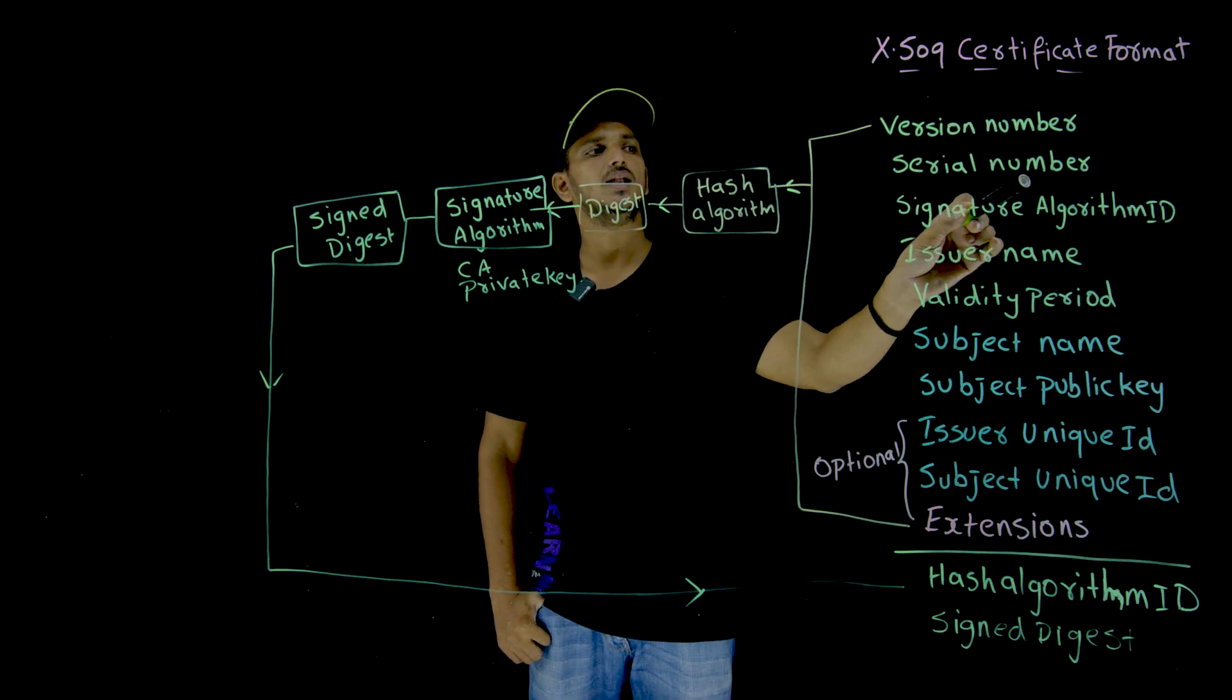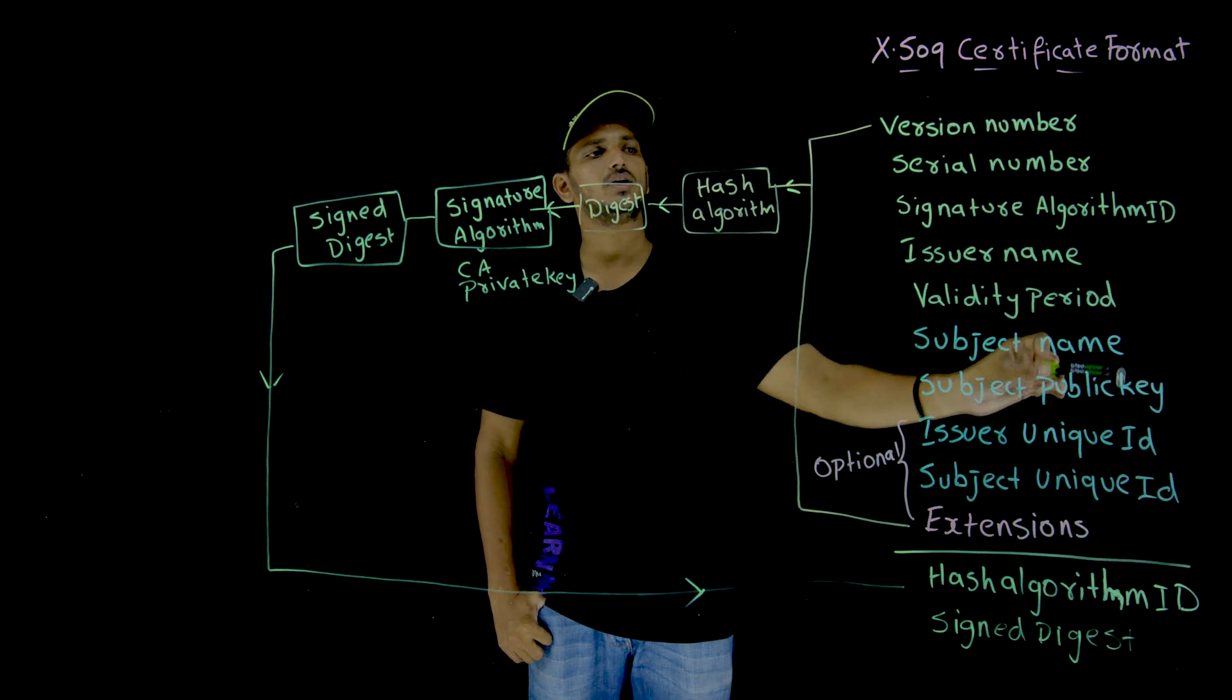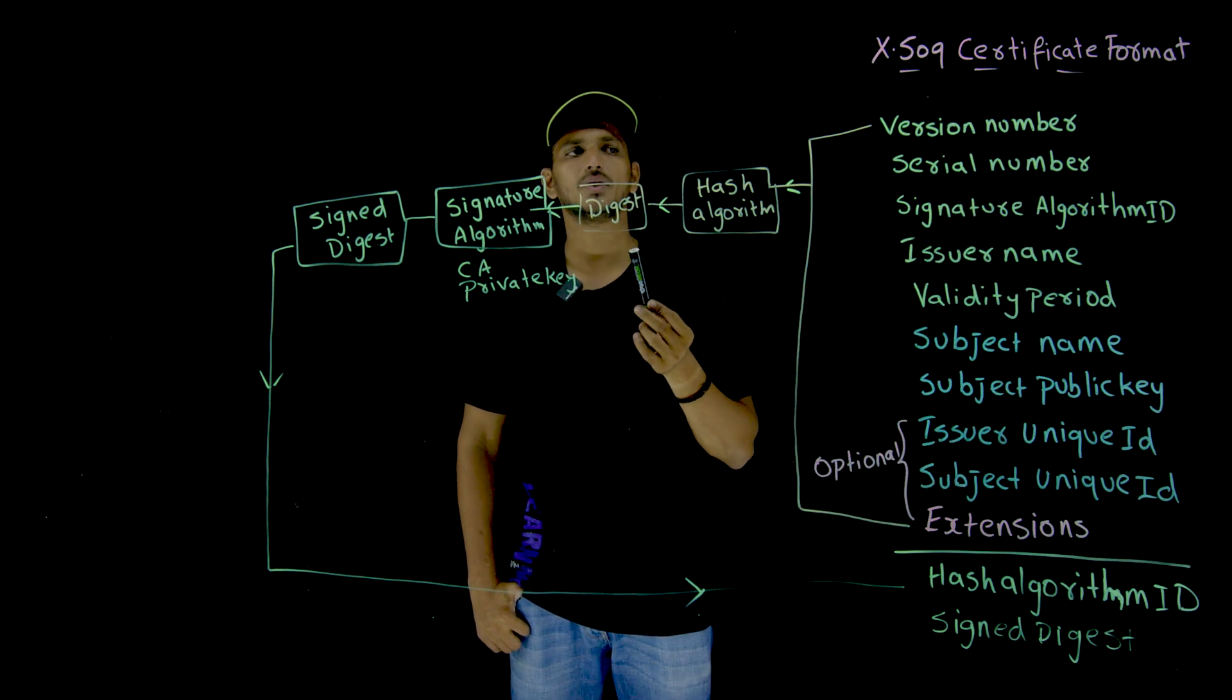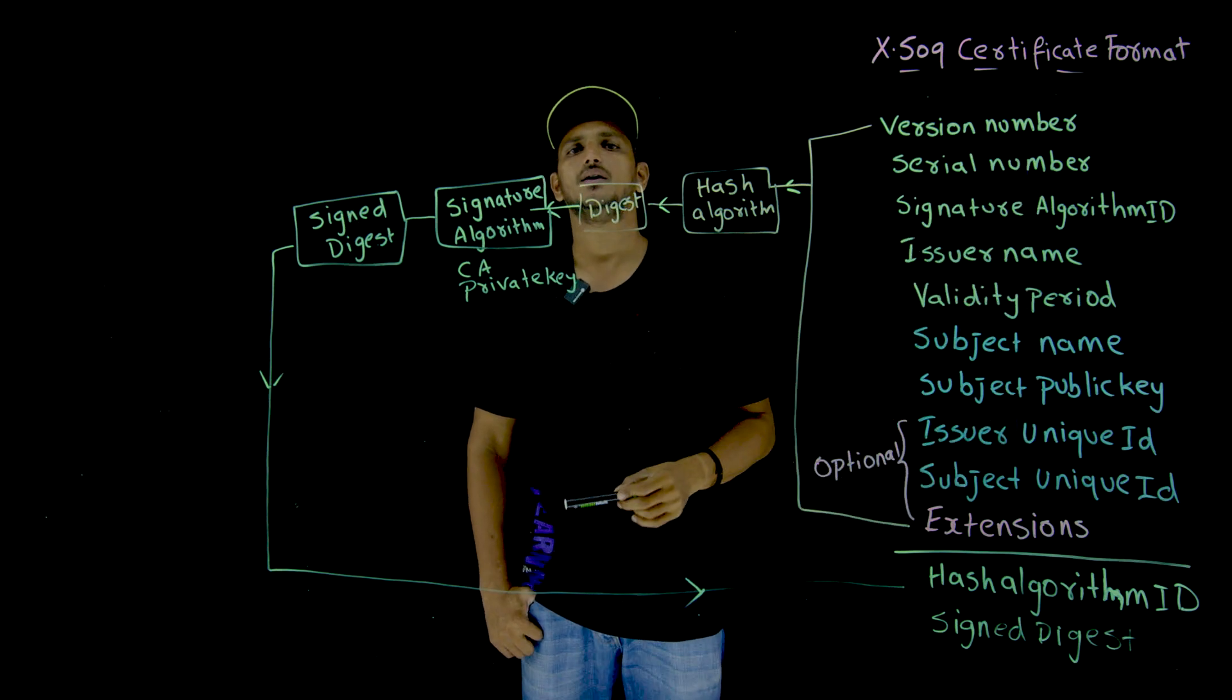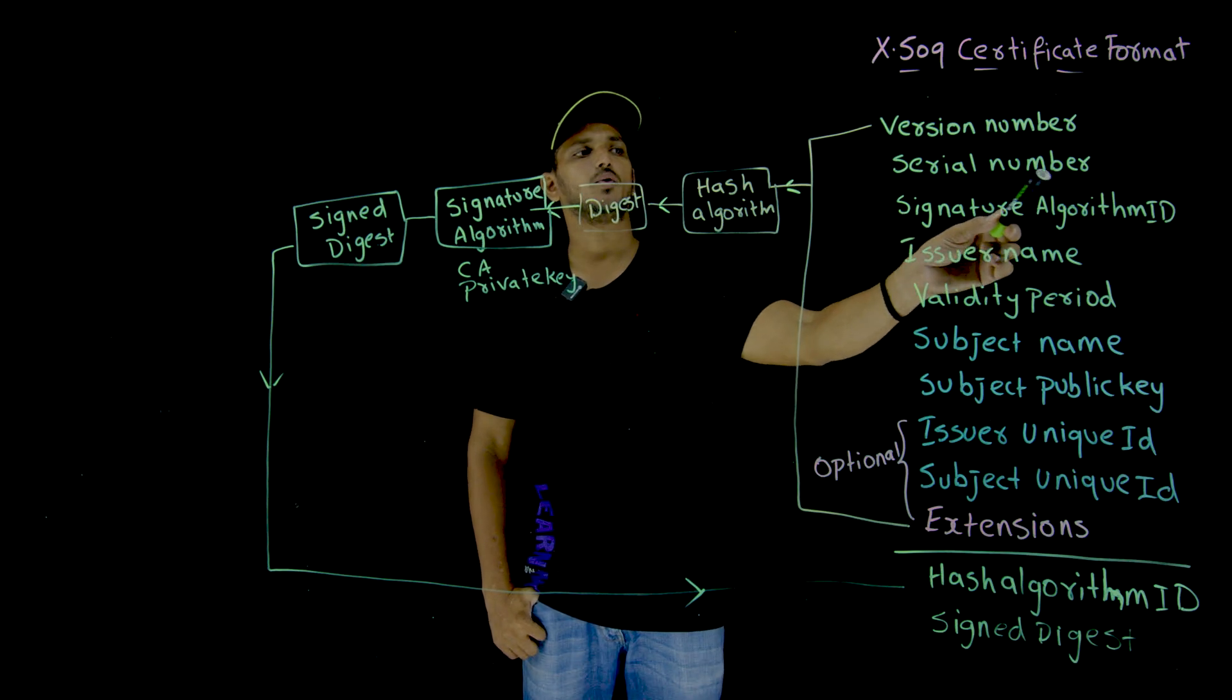Second thing is serial number, each digital certificate is provided with a sequence number, that we call it a serial number. That serial number should be provided next.